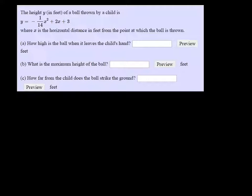Okay, so the height in feet of a ball thrown by a child is y equals negative 1 over 14 x squared plus 2x plus 3, where x is the horizontal distance in feet from the point at which the ball is thrown.